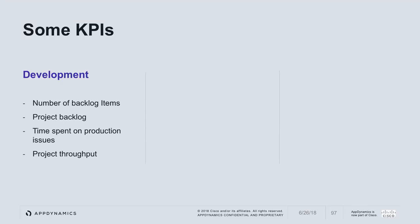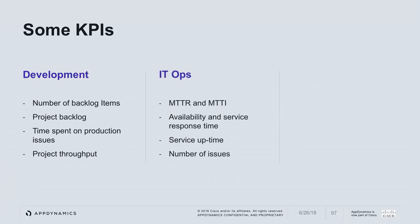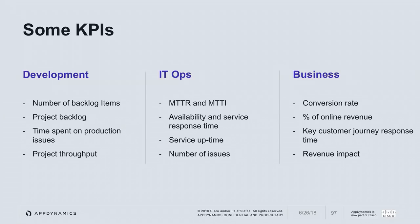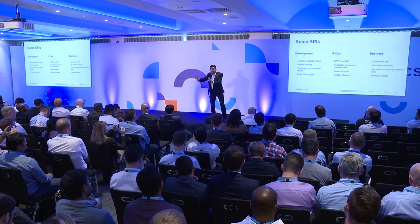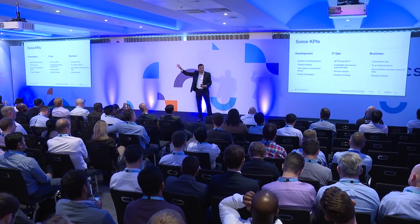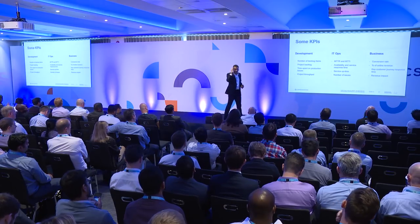Here are some examples: in development, track number of backlog items or time spent on production issues. For IT ops and DevOps, focus on mean time to resolution, availability, and service uptime. For business, focus on conversion, sales, and revenue — like what percentage of online revenue is exposed, how many shopping carts are active, and how much money would be impacted if a microservice had a problem.